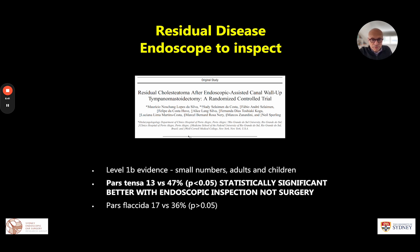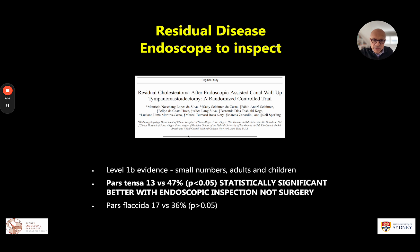Another interesting paper used the endoscope to inspect and then dissect, using aggregate data between children and adults. It showed that for disease in the pars tensa, using the endoscope had a statistically significant better outcome in residual rates — 13% versus 47%. For pars flaccida disease there was a trend favoring the endoscope in the middle ear and attic, but it did not reach statistical significance.